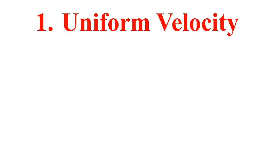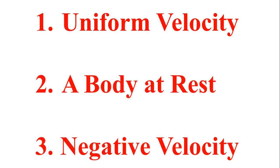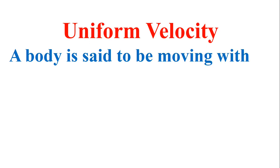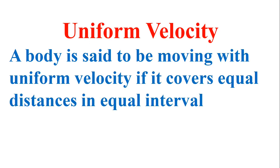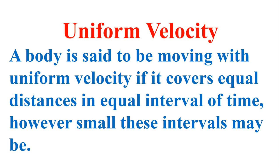The three states are: one is uniform velocity, second is a body at rest, and third is negative velocity. We will see what type of graph appears in each of these cases. Let's start with uniform velocity. A body is said to be moving with uniform velocity if it covers equal distances in equal intervals of time, however small these intervals may be.